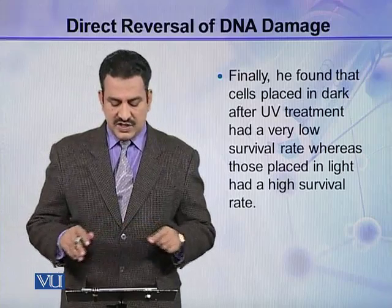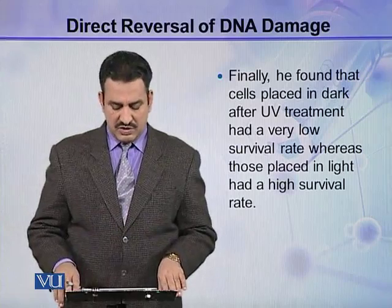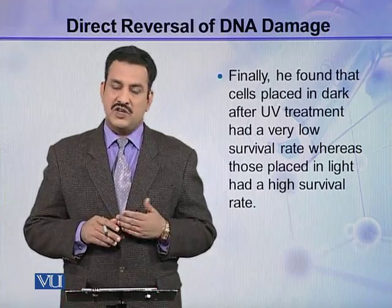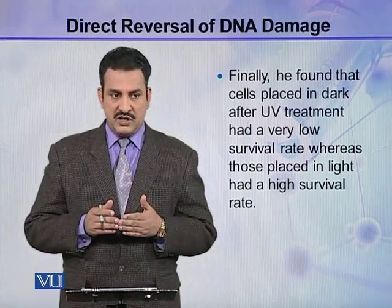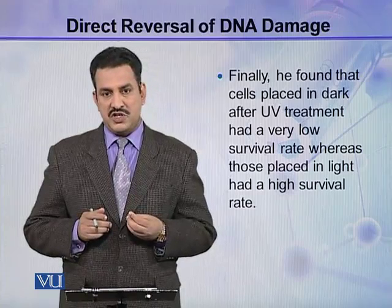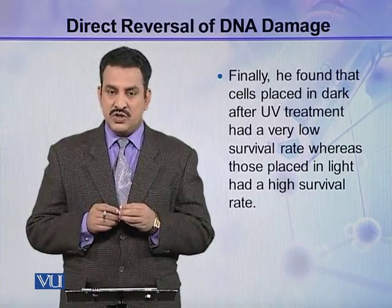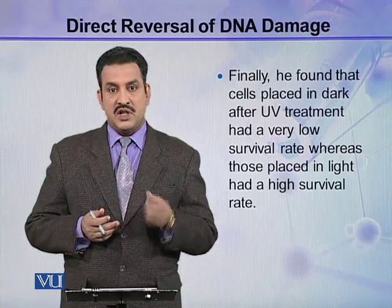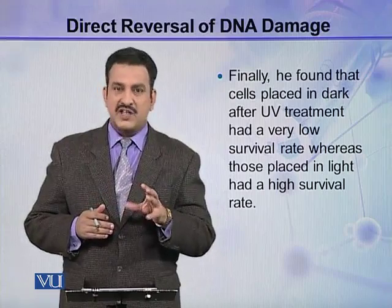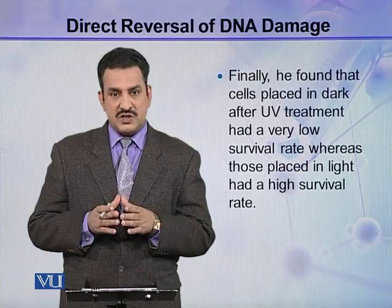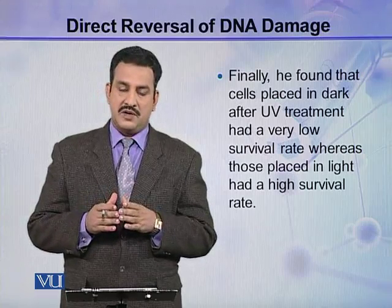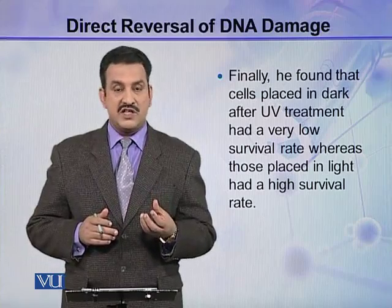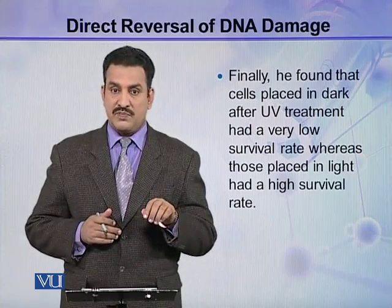Finally, he found that cells placed in the dark after UV treatment had a very low survival rate, whereas those placed in light had a high survival rate. That means the bacteria which were mutated after UV irradiation and then placed in light survived. Light had somehow corrected the mutations, while the UV-treated bacteria placed in dark could not repair their mutations, and most were killed, resulting in fewer survivors in those dark plates.